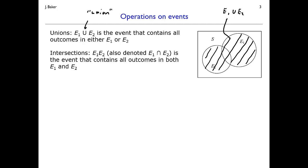We can also talk about an intersection of E1 and E2. We write it with a closed cup symbol, or simply write E1 E2 with no symbol between them — either notation represents the intersection. The intersection is the collection of events contained in both E1 and E2, represented here with red shading. We might read the intersection as 'E1 and E2' since an outcome must be in both, and the union as 'E1 or E2' since it only needs to be in one or the other.